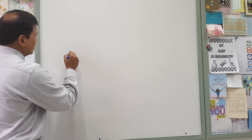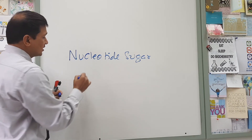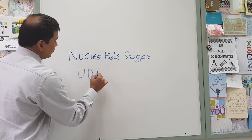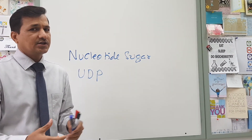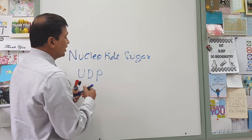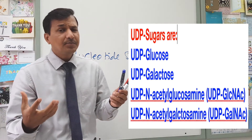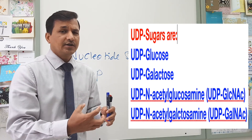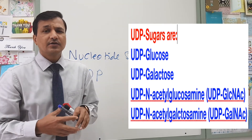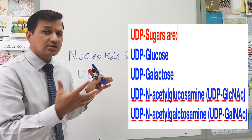Now let's see what kind of carbohydrates are attached to glycoprotein molecules. The carbohydrate units attached to glycoproteins come in as nucleotide sugars. Nucleotide sugars come in as UDP sugars — UDP being uridine diphosphate. The uridine diphosphate-associated sugars added onto glycoproteins include UDP glucose, UDP galactose, UDP N-acetyl glucosamine, and UDP N-acetyl galactosamine. All of these molecules come into the protein molecule to make a glycoprotein as UDP sugars or nucleotide sugars.